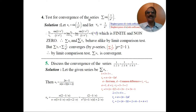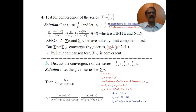Test for the convergence of the series sine of 1 by n squared. Let un be sine of 1 by n squared and vn equal to 1 by n squared. To choose vn, we follow the shortcut: highest power of n in the numerator divided by highest power of n in the denominator.